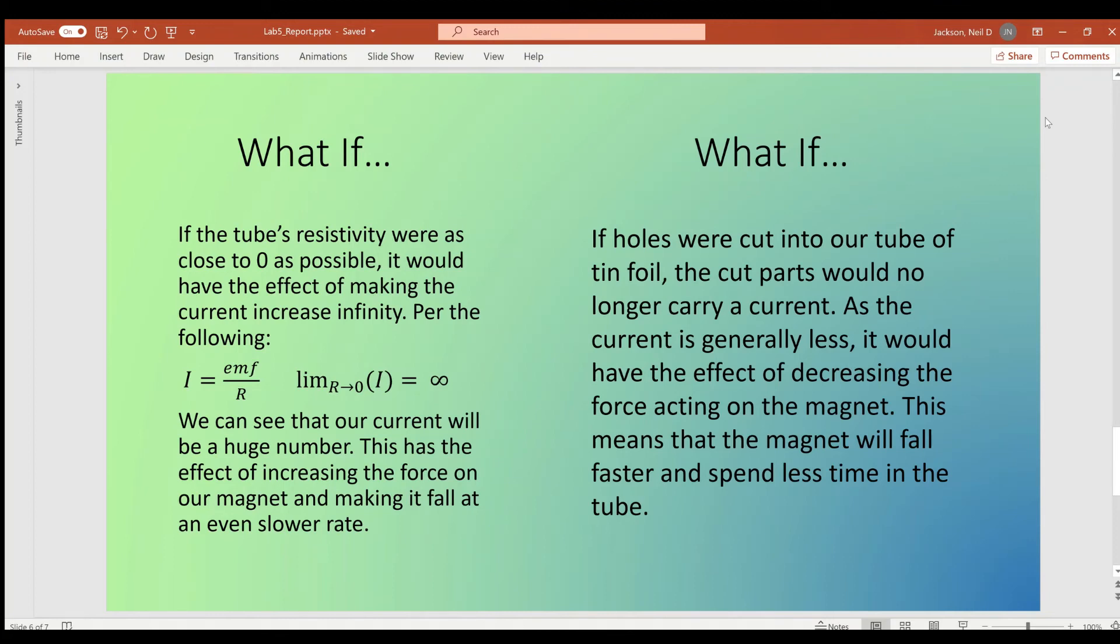And then if we were to cut holes into our tube, that's essentially ruining or killing parts of the current in that section, meaning the current is going to be less overall, which has the effect of decreasing the force on the magnet, meaning that the magnet will fall through the tube faster.